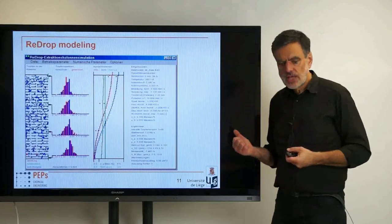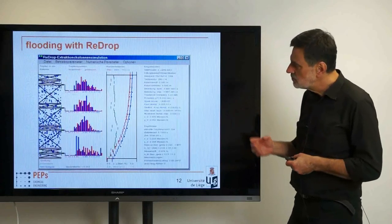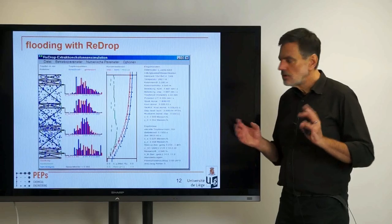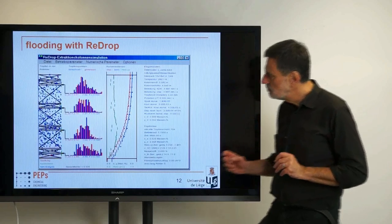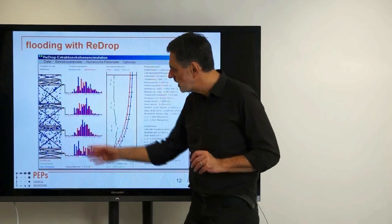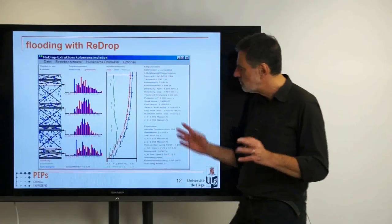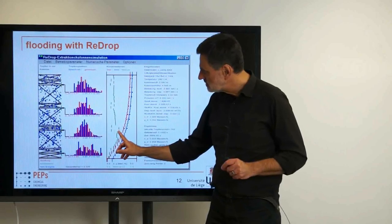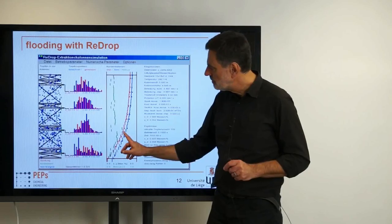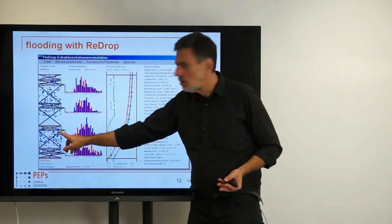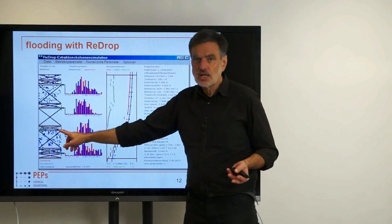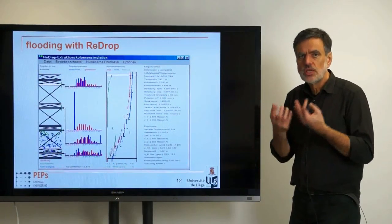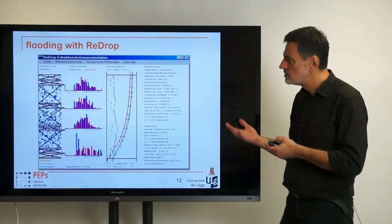How strong this approach is becomes apparent when we look at a case where we just changed the flow rates a little bit compared to a stable state before. We now have a packed column. You see the droplets rising, the drop size distributions, and the concentration profiles are more or less in steady state. In green, we see the hold-up, which is steadily increasing, first slowly and then more and more rapidly. You can see that the flow of the dispersed phase stops — this is the so-called flooding, which is exactly what you observe in real extraction columns. Inherent in this drop-based approach is the ability to describe the flooding with corresponding accuracy.